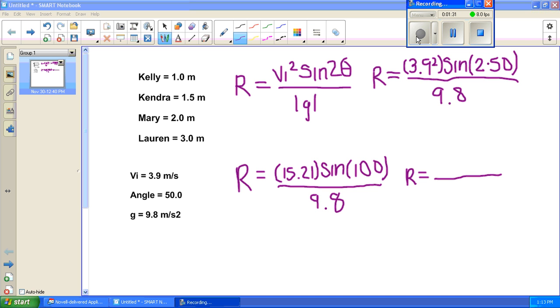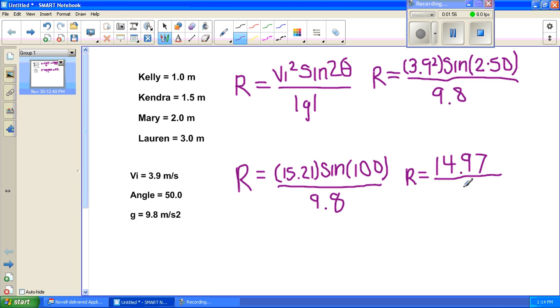When you square 3.9, it will equal 15.21, and 50 times 2 equals 100. So 15.21 sine 100 equals 14.97. And after that, you'll put 9.8 on the bottom.